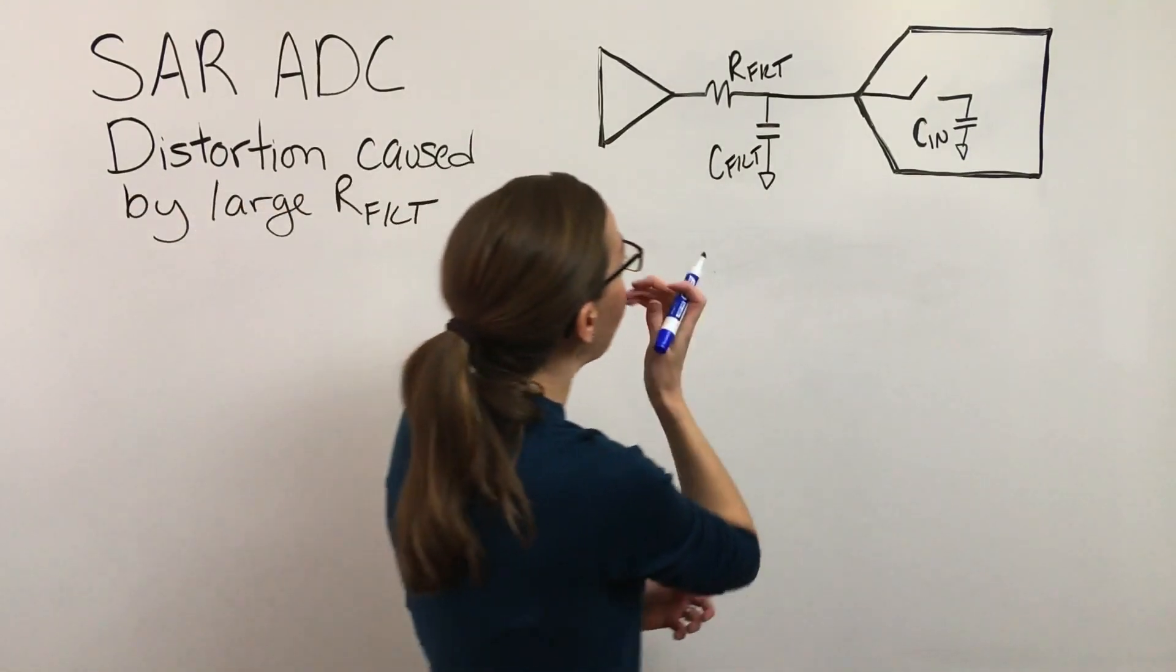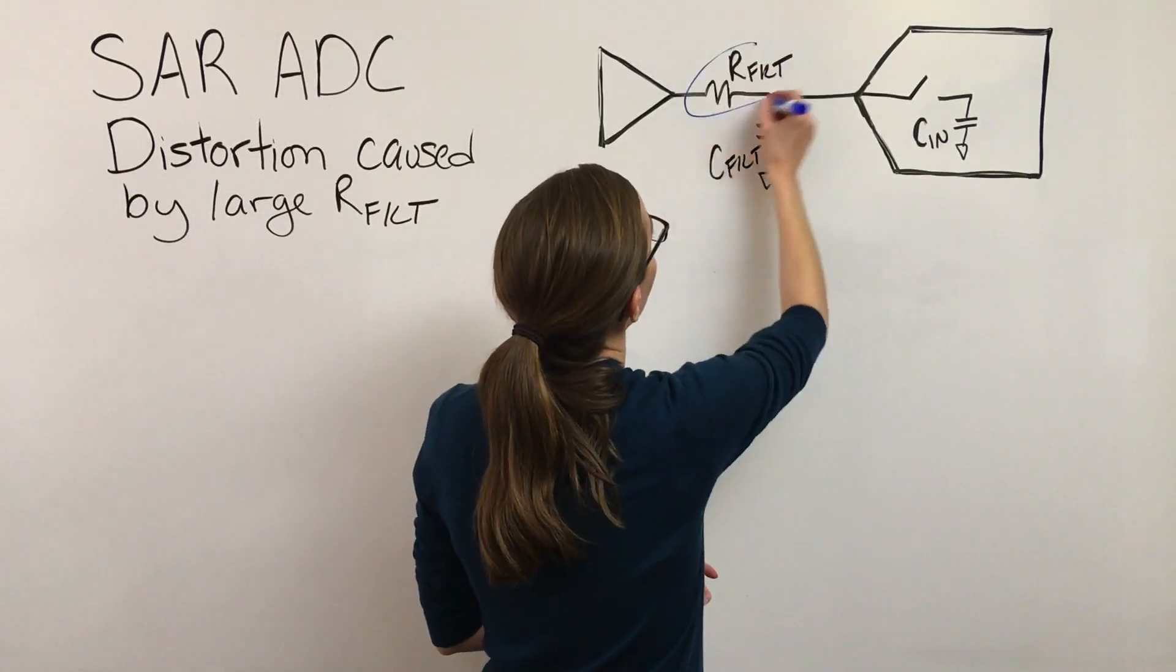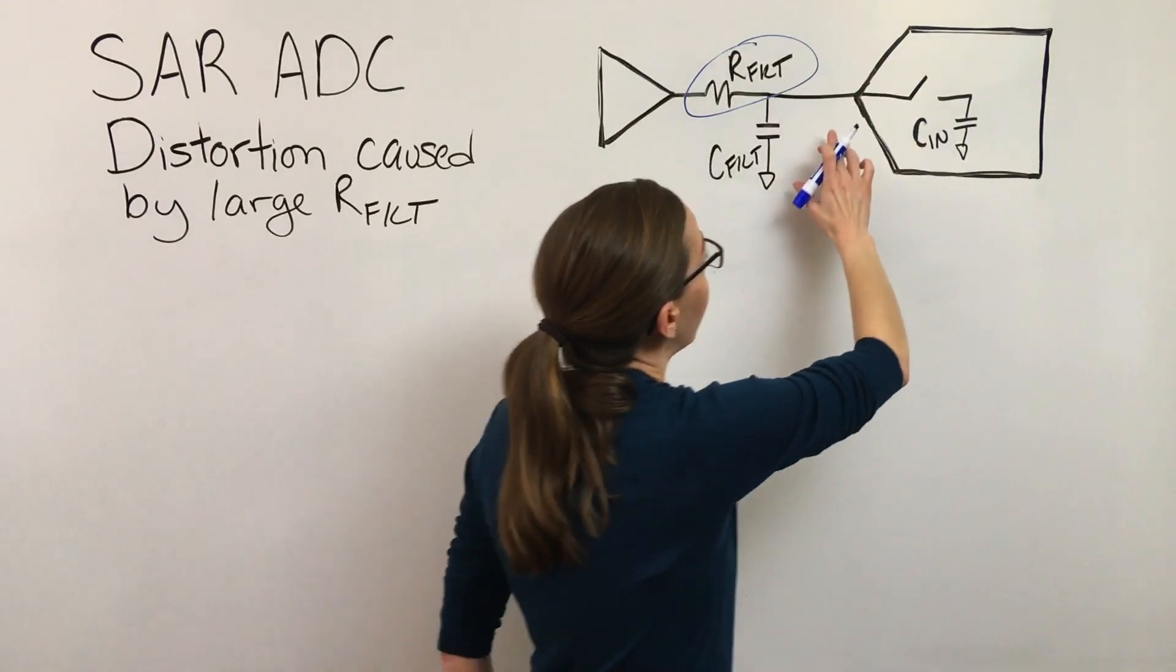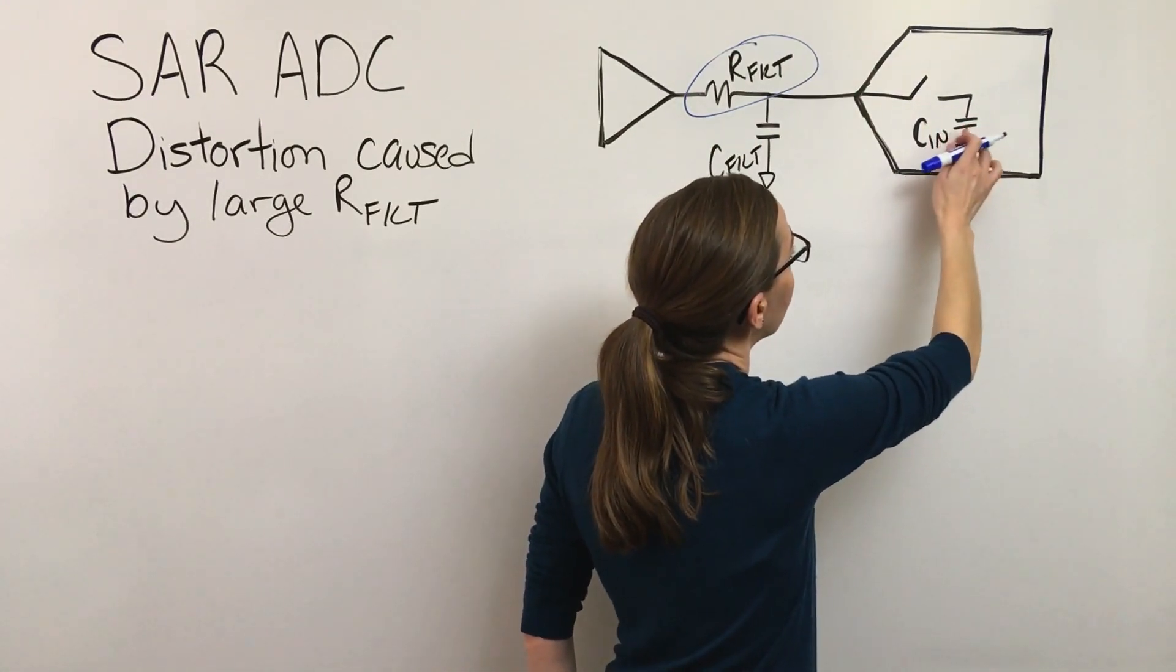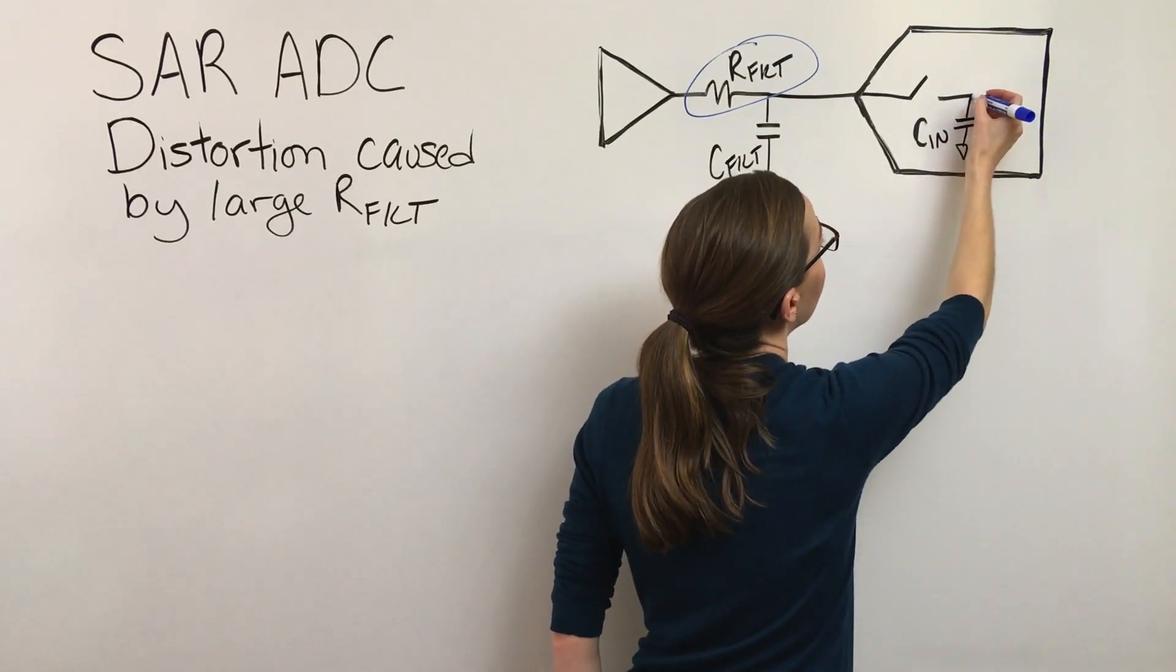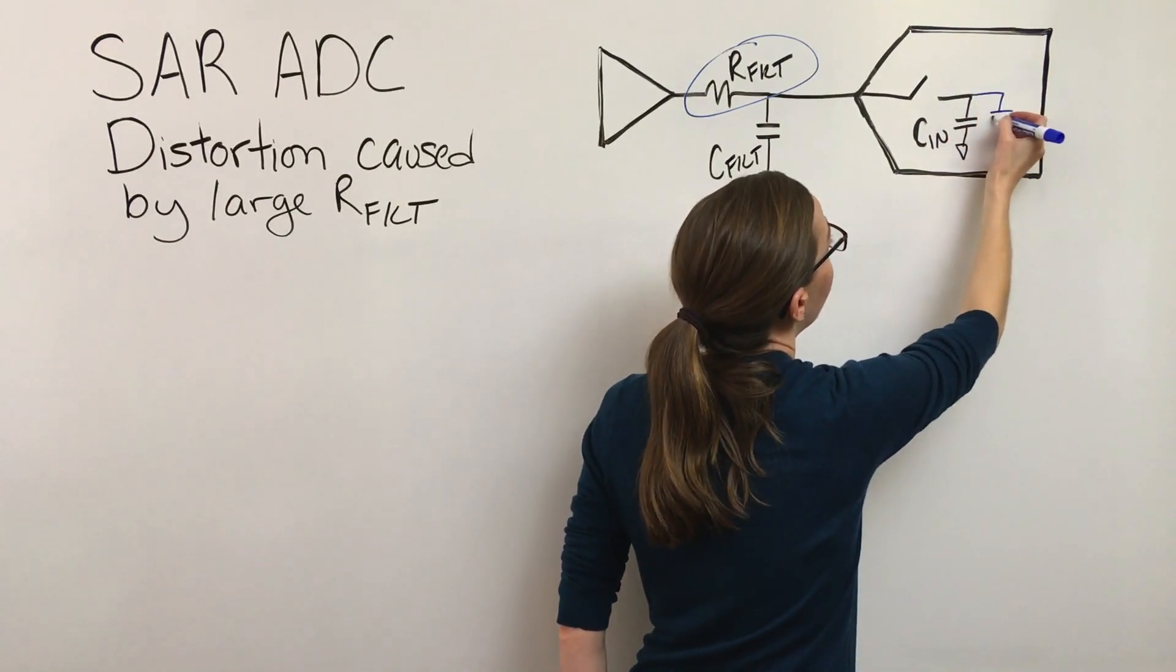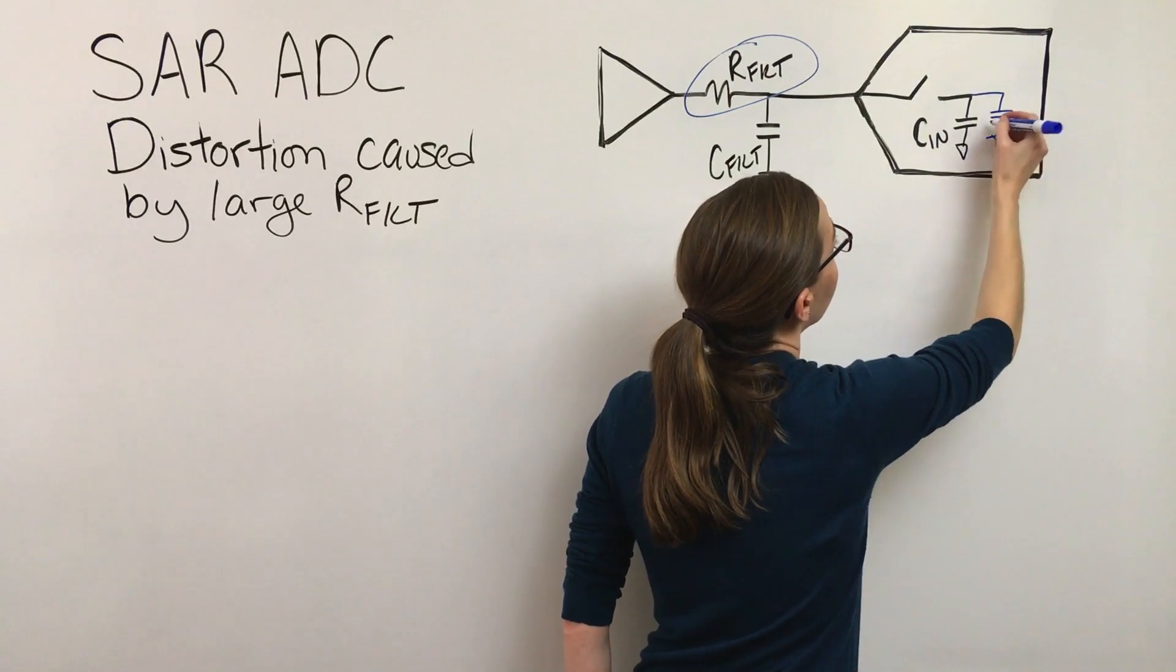We're going to talk about an error that is caused by this resistor value getting large, and it's not at all something you can improve by slowing down the sample rate.